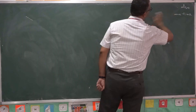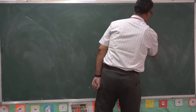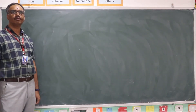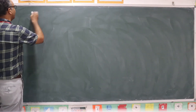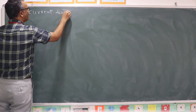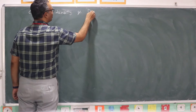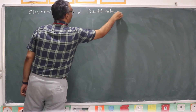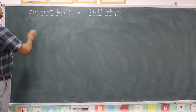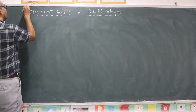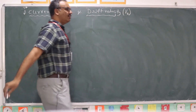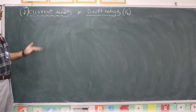In order to study current electricity, we require another set of definitions. Let us discuss two important definitions. One is current density and the other is drift velocity. Current density is represented with a letter J (vector), and drift velocity is represented with V_D.